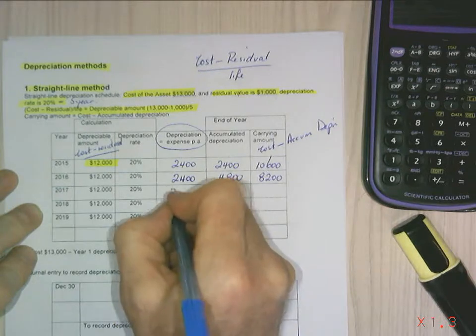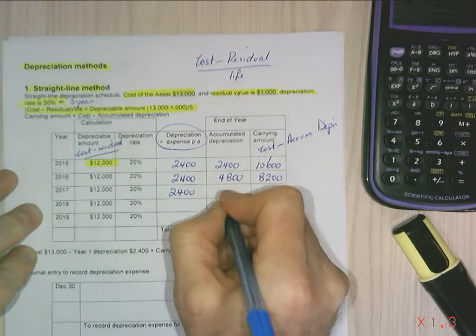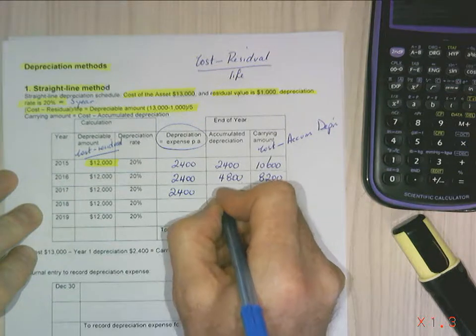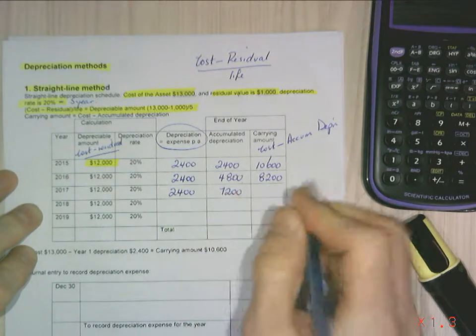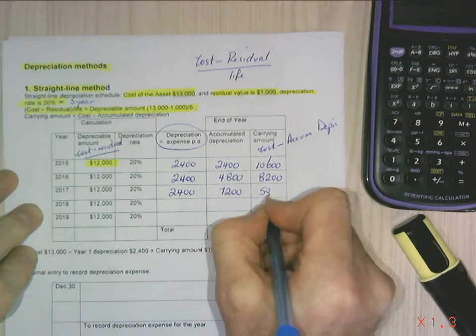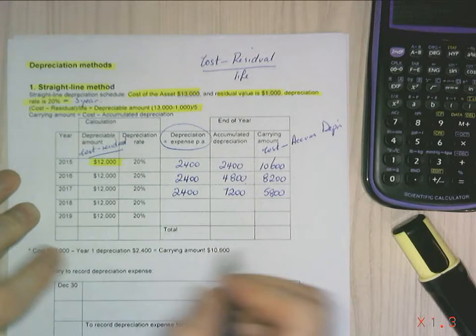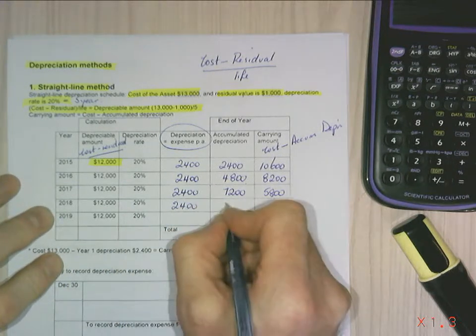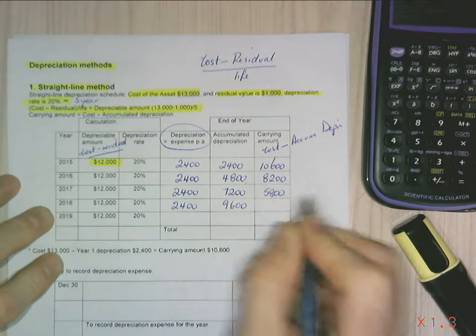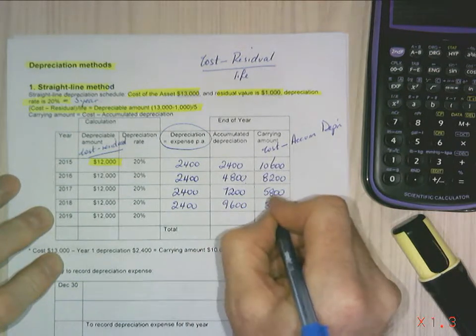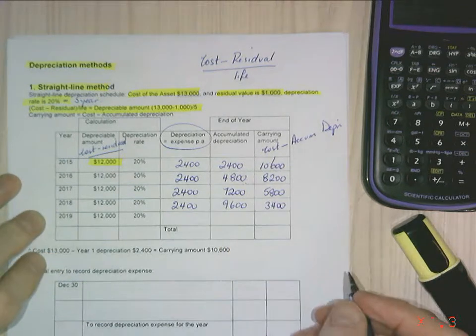Into year 3, $2,400 again. That comes in at $7,200. My calculator not working, or my brain not working too well at the moment. $5,800 is my carrying amount. Repeating for year 4, $2,400. $9,600 is my accumulated depreciation. $3,400 is my carrying amount.